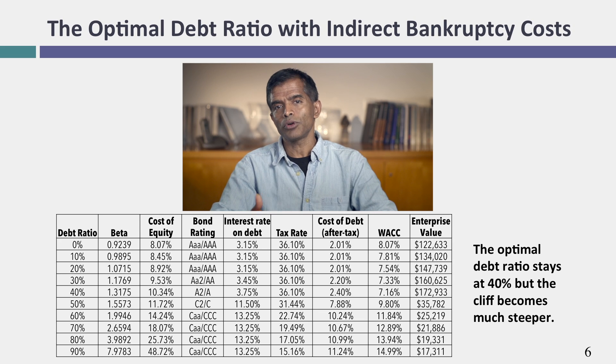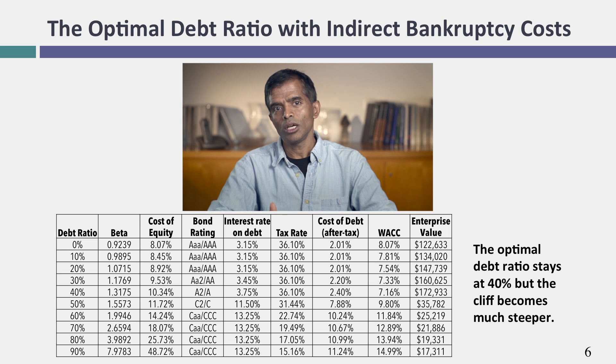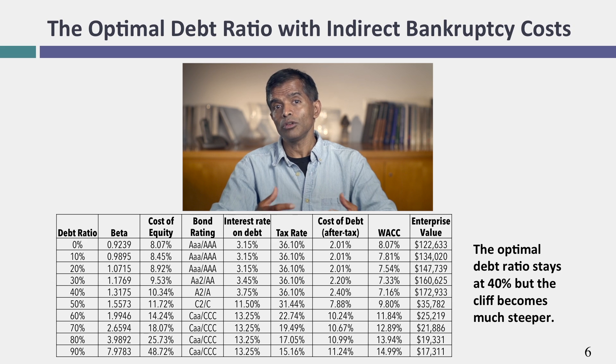For most companies, when you bring in indirect bankruptcy costs, the optimal actually shifts downward, which makes sense: if you have more indirect bankruptcy costs to worry about, you should borrow less money. That's the first enhancement. Now let me get back to the traditional cost of capital approach, which I'm going to apply to the remaining companies.